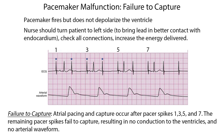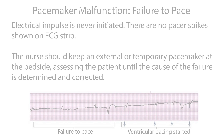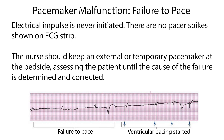In failure to capture, the pacemaker fires but does not depolarize the ventricle. The nurse should turn the patient to the left side to bring the lead in better contact with the endocardium. Check all connections and increase the energy delivered. In the example, atrial pacing and capture occur after pacer spikes 1, 3, 5, and 7. The remaining pacer spikes fail to capture, resulting in no conduction to the ventricles and no arterial waveform. In failure to pace, the electrical impulse is never initiated, so there are no pacer spikes shown on the ECG strip. The nurse should keep an external or temporary pacemaker at the bedside, assessing the patient until the cause of the failure is determined and corrected.